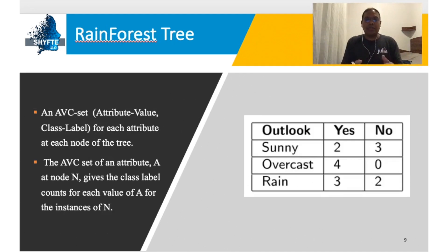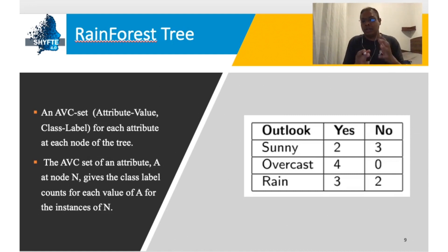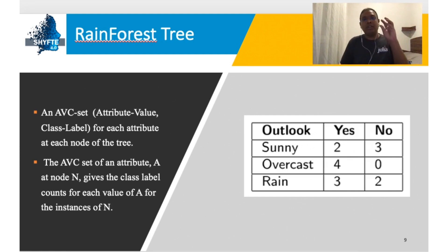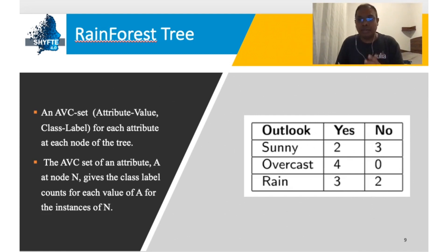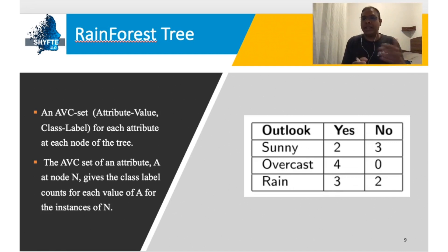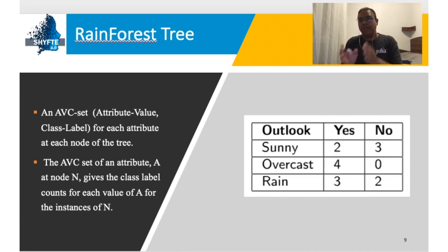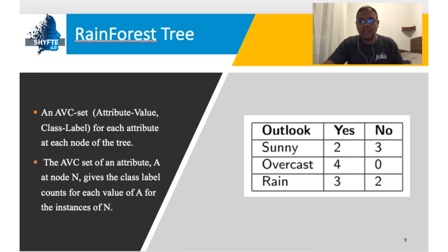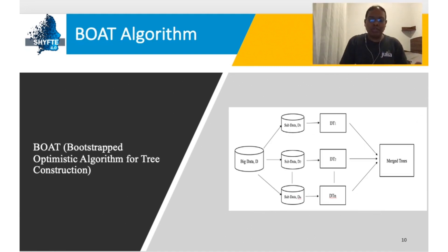We will discuss two scalable algorithms. The first is Rainforest. The Rainforest algorithm maintains a table for each attribute and its attribute values. This table is known as the AVC table, or AVC set — the Attribute-Value-Class table. For example, 'outlook' is an attribute with three attribute values. The algorithm maintains this table for each attribute and counts the attribute values.